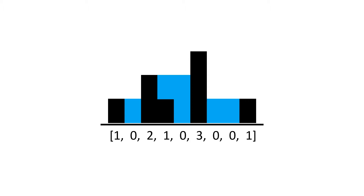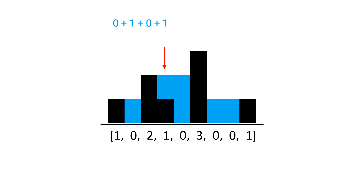One of the tricky parts of this problem is identifying how we can even calculate the area in the first place. In order to figure this out we need to make a few key observations. The first is that we need to calculate each position individually — iterate through each position and calculate how much water that position can hold. For this example, the first position holds zero units, the second holds one, the third holds zero, the fourth holds one, and adding all these up we get our grand total of six.